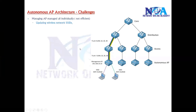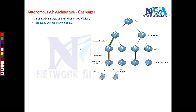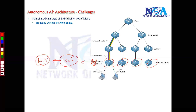One of the major issues is we have to manage each and every access point individually. If you have one or two access points, you can manage them individually. But if you have hundreds — or even just 10 to 15 — you have to go to each one and configure the SSID, security parameters, pre-shared keys for authentication, and radio frequency channels. Configuring all these parameters on each access point is not efficient.